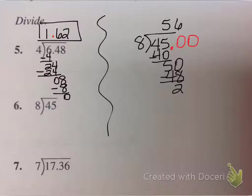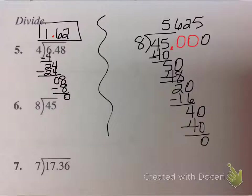8 goes into 50 six times. I've got that next zero coming down. 8 goes into 20, that would be 2 times. I don't have another zero, but you know what, I can tack on another one and just bring another one down. 8 goes into 40 five times, and now I finally get the remainder of zero.